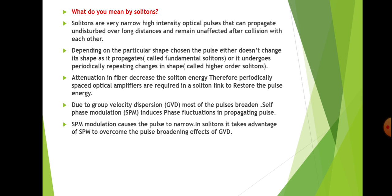In solitons, an advantage is taken of self-phase modulation to overcome the pulse broadening effects of GVD. When the pulse undergoes group velocity dispersion it broadens, but due to the effect of self-phase modulation that broadening is reduced, because self-phase modulation reduces the pulse width. So the effect of GVD is cancelled out by the SPM effect.